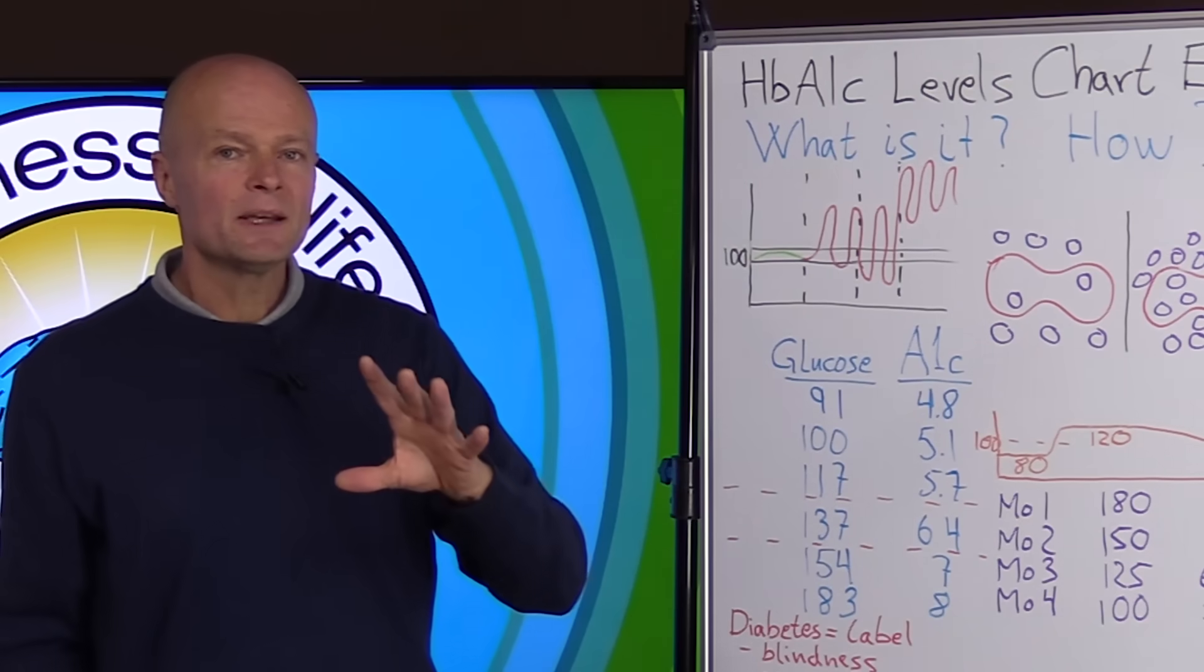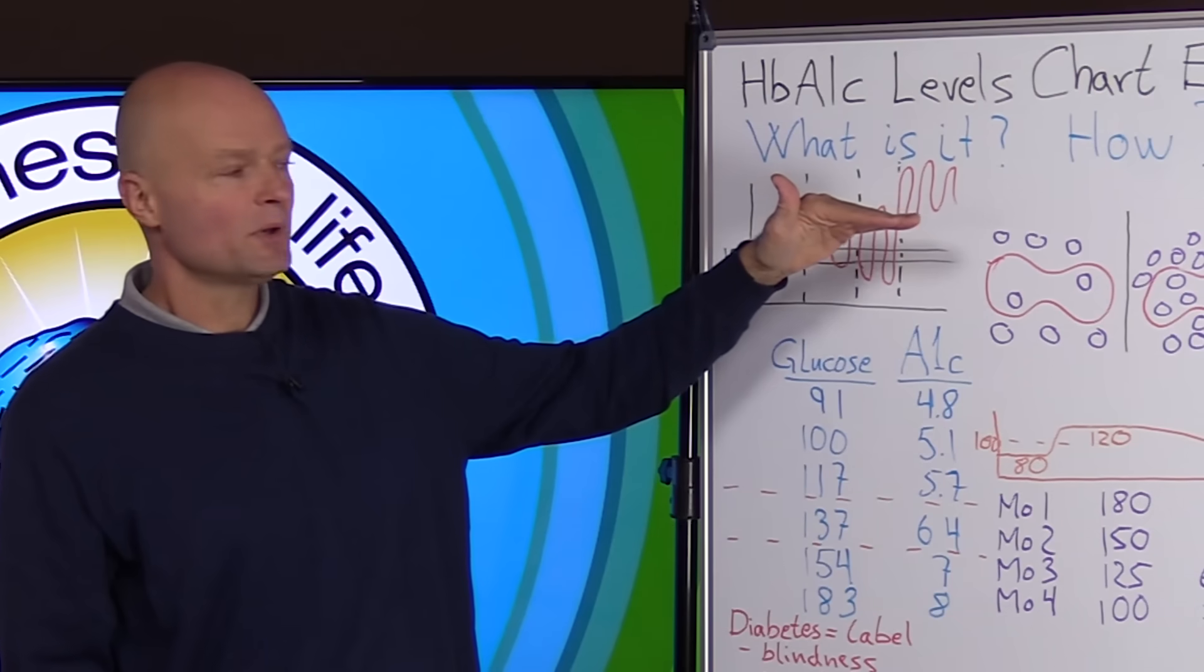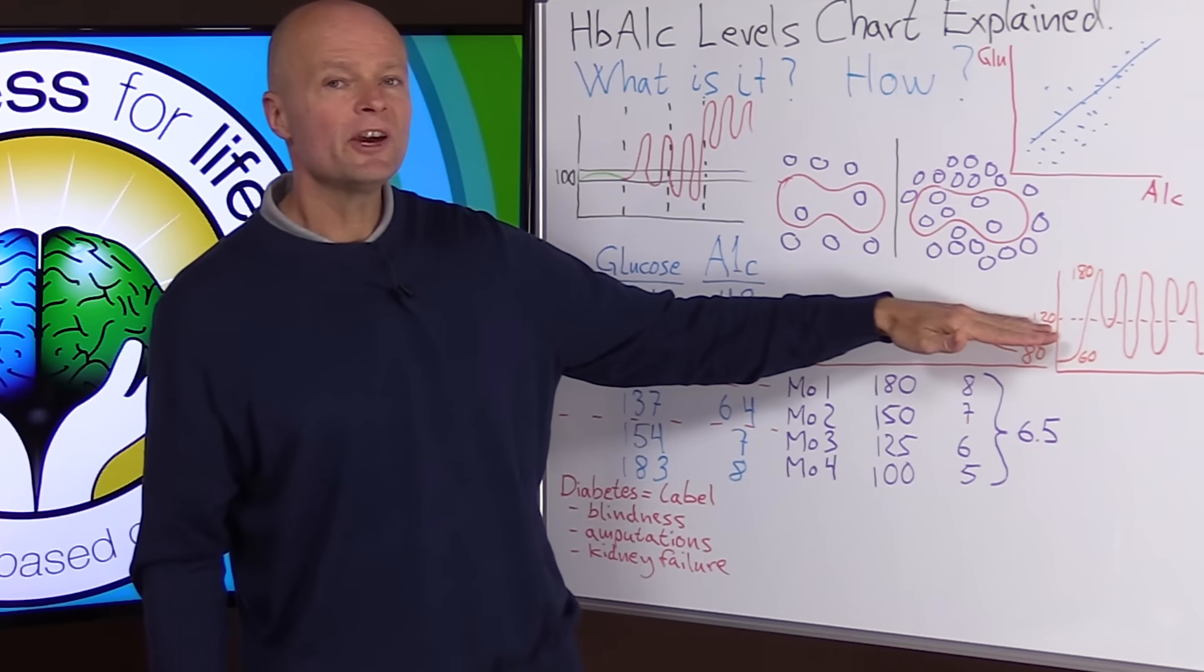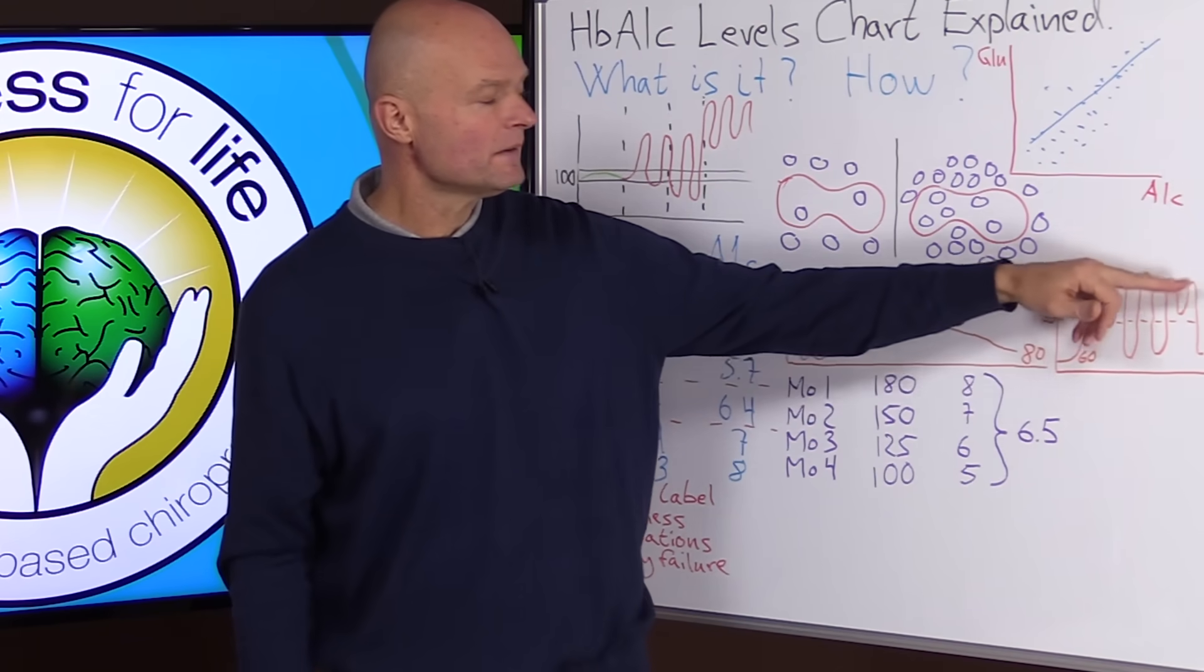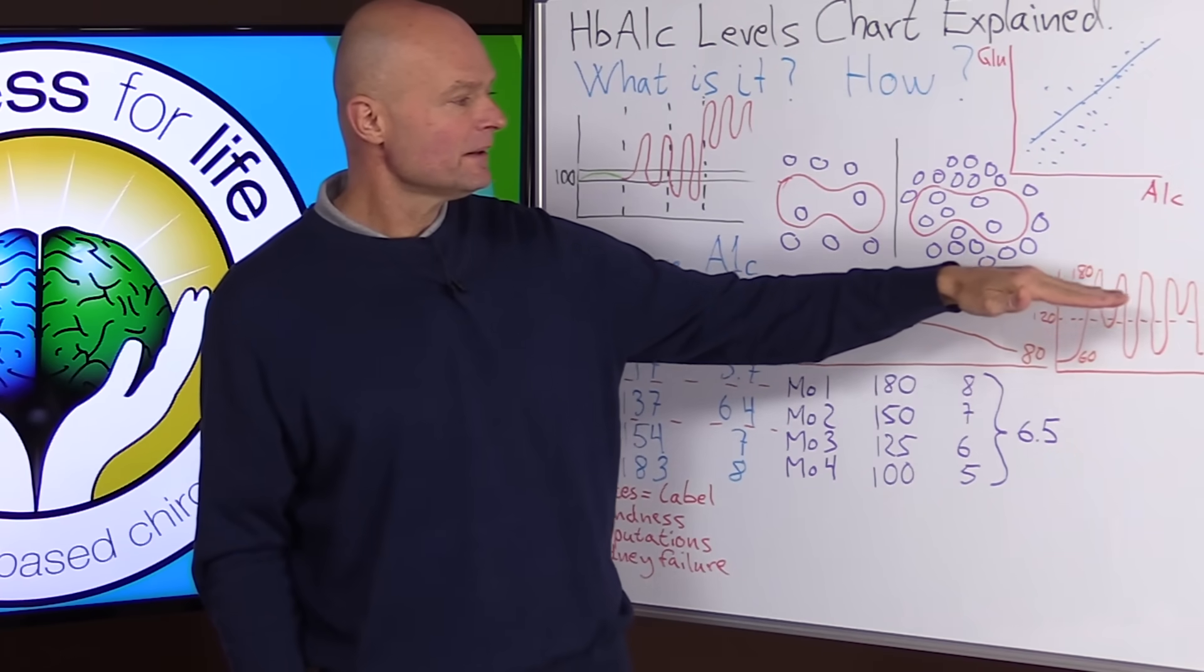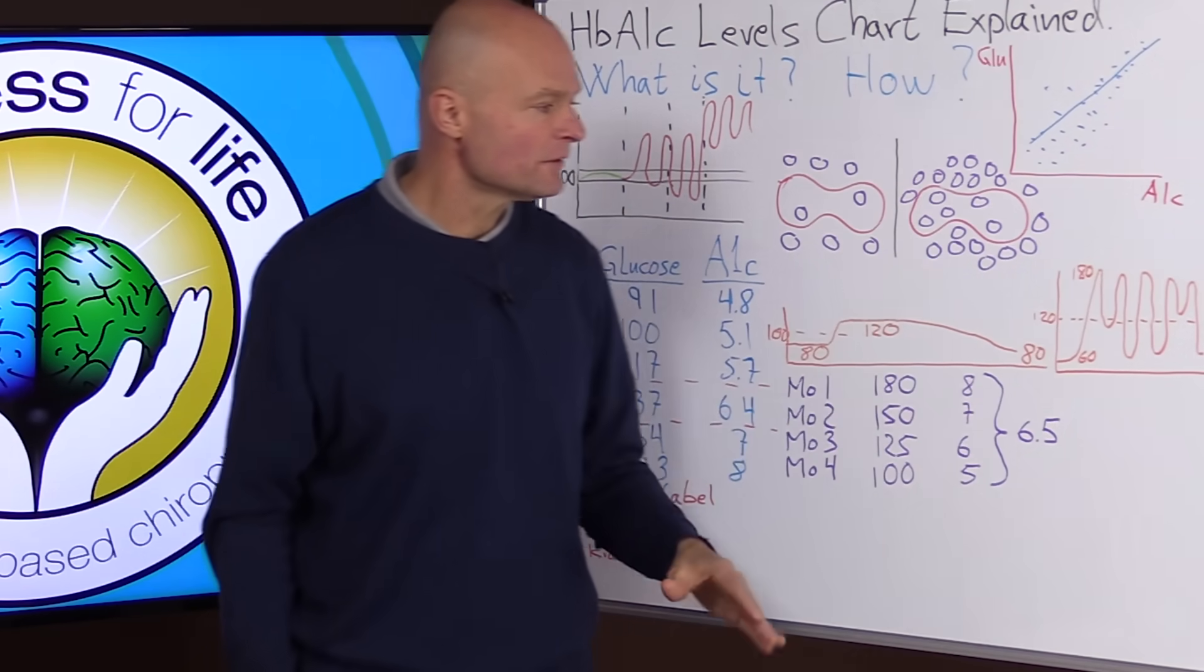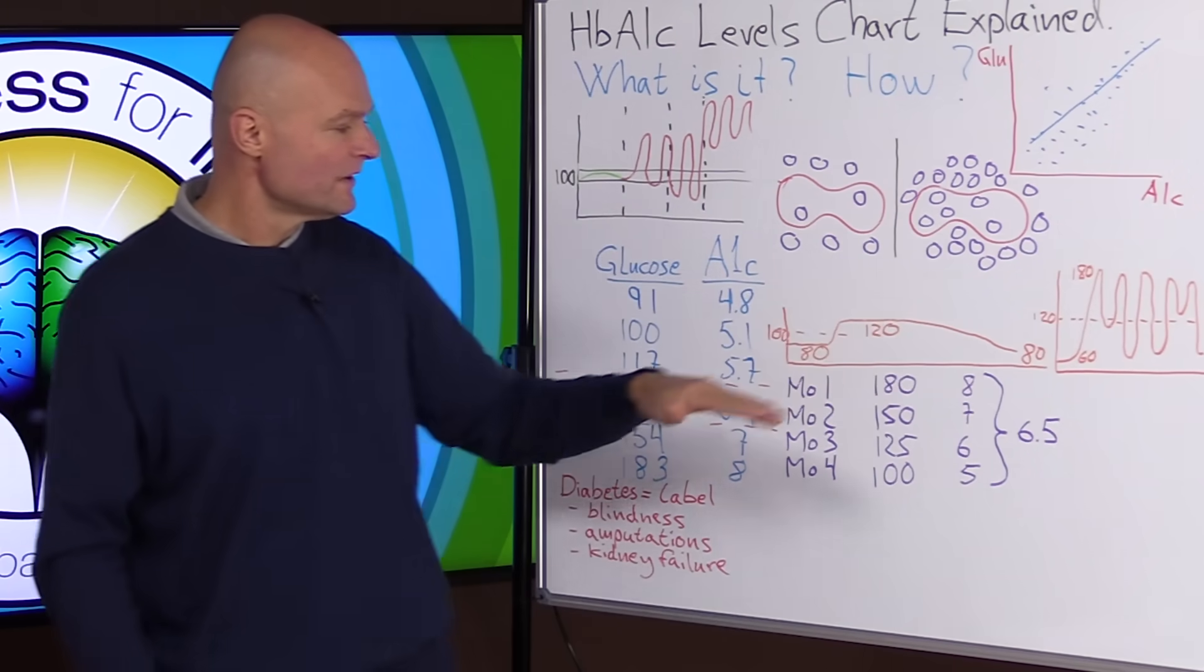So again, it doesn't happen like this every time. But it's just a scenario of how these things can happen over time. So what we want to understand is that even if the average isn't too terribly bad, we're still creating damage. We're still not producing energy at a steady level. We're not functioning at our optimum and we're still developing inflammation with all this insulin. So there's lots and lots of different drawbacks to this scenario over this, even though we're still considered in the normal range.